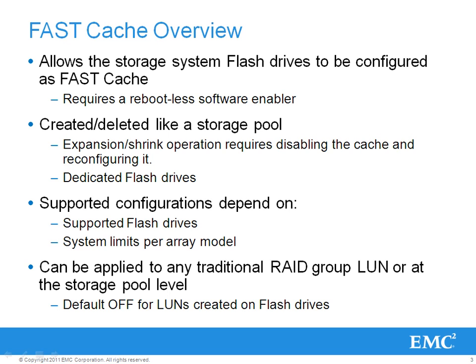Supported fast cache configurations depend on the storage system model and the flash drives that are installed in the storage system. For example, you can configure higher capacity fast cache in a VNX 7500 as compared to that on a VNX 5300 storage system. Also, in VNX storage systems, we support 100GB and 200GB flash drives for fast cache. As far as granularity is concerned, fast cache can be configured at the LUN level if you are using traditional RAID group LUNs, or at the pool level if you are using pool LUNs.